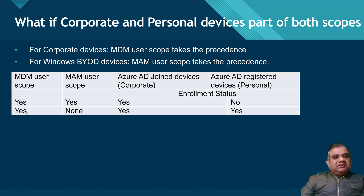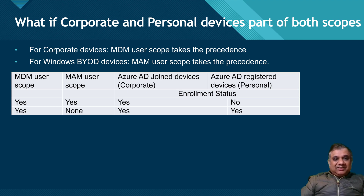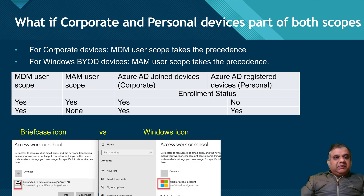The second scenario: MDM user scope is set to Yes and MAM user scope is set to None. In this case, the corporate device will be enrolled and also your personal device is going to be enrolled, because MAM user scope is set to None and MDM user scope will kick in since nothing is specified for MAM. This is something we need to completely avoid — MAM user scope should not be set to None if you don't want personal devices enrolled. Unless it's a special case, we don't want any organizational control over enrolled personal devices.